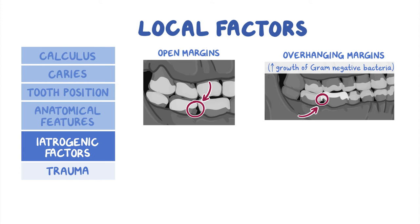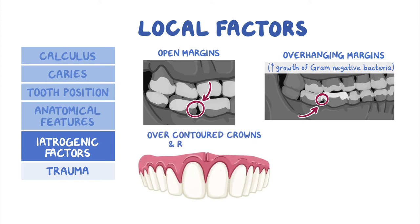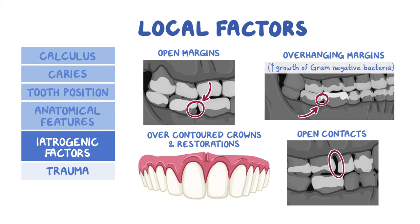Over-contoured crowns and restorations are associated with biofilm retention and poor self-cleaning mechanisms of the teeth by surrounding tissues such as cheeks, lips, and tongue. Finally, open contacts — or spaces between adjacent teeth — are commonly associated with food impaction. Food impaction can lead to direct trauma to the interdental tissue and creates a favorable environment for bacterial growth and dental plaque formation.